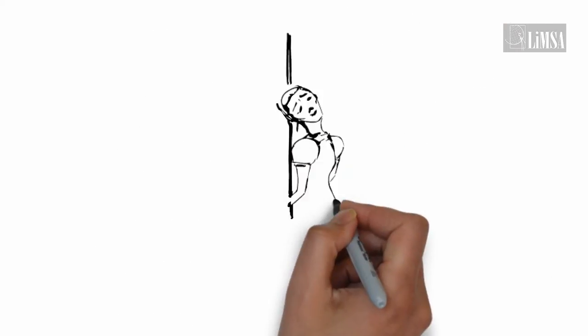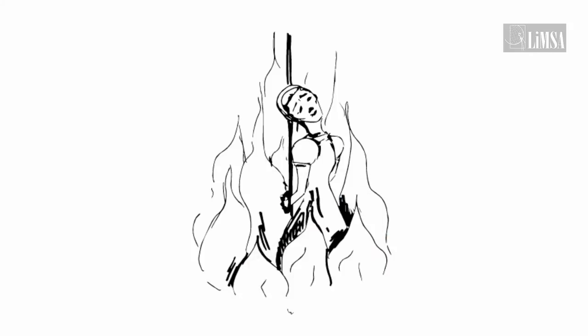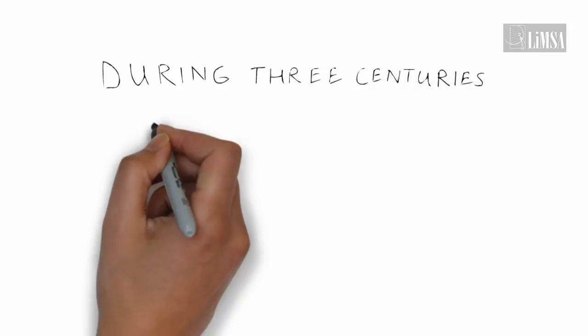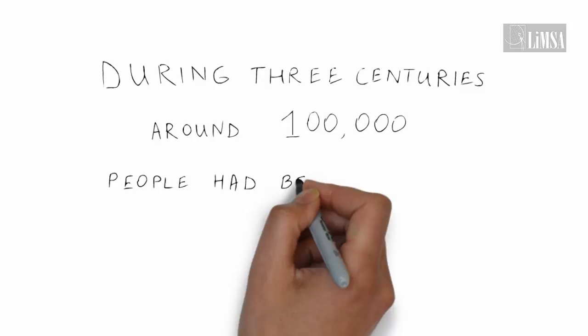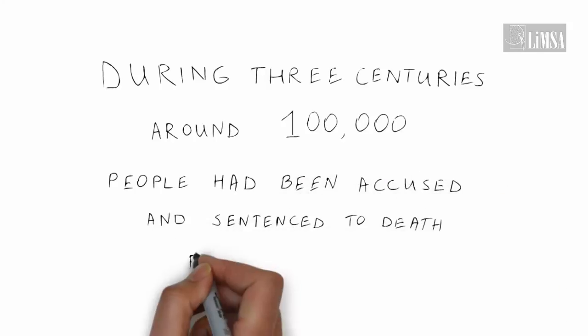She was brought to trial and sentenced to death as a witch. During three centuries, around 100,000 people had been accused and sentenced to death for witchcraft.